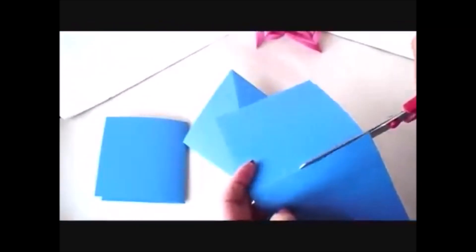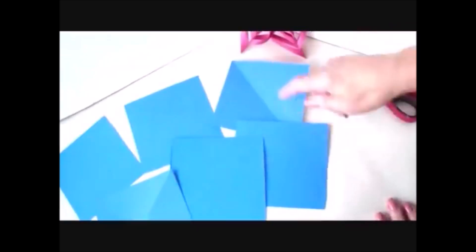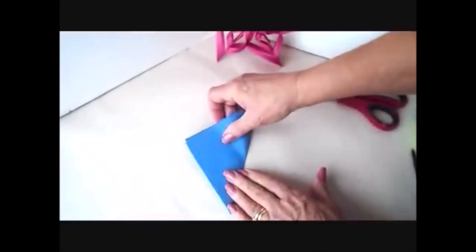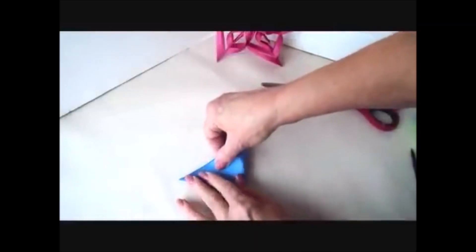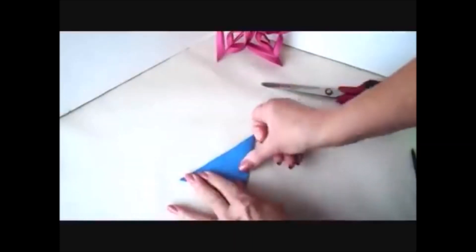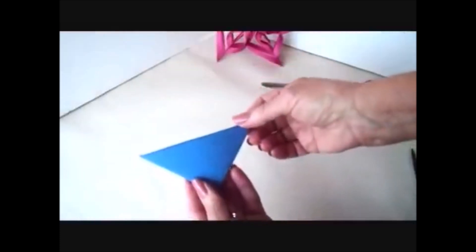I'm going to cut them apart on the crease. And I have one, two, three, four, five, six. To make each segment, you're going to fold your paper diagonally. And then you're going to fold it again diagonally. So you'll have this triangle.